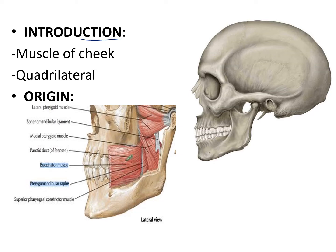First, we will introduce the muscle. This is the muscle of the cheek and it is quadrilateral in shape. The buccinator muscle arises from the maxilla opposite the three molar teeth, from the mandible opposite the three molar teeth, from the anterior oblique line of the mandible, and also from a raphae called the pterygo-mandibular raphae.